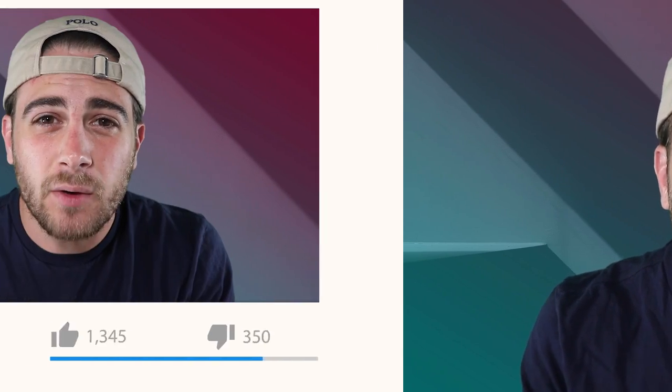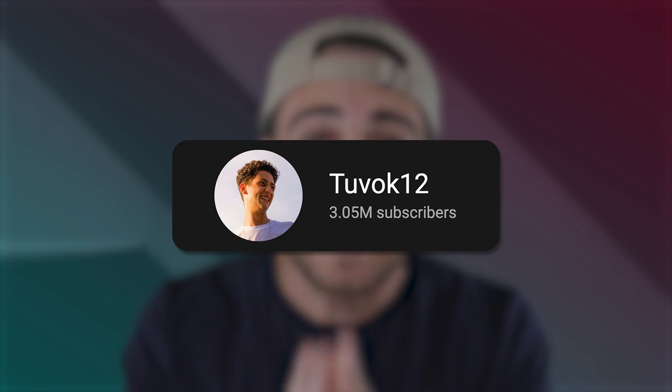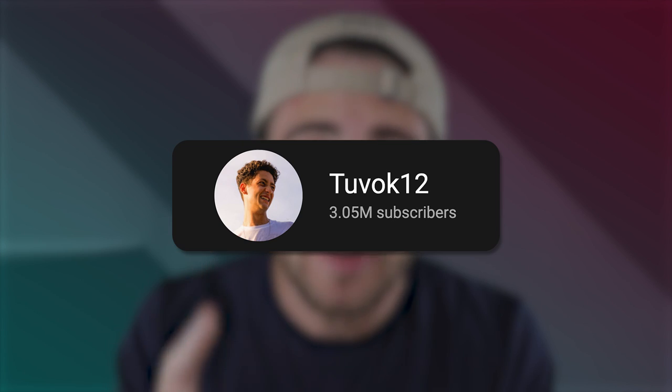By the end of this video, you're going to know exactly how to go viral on your next YouTube Short because you're going to have the four principles. Every time I mention one of these principles, one is going to be unlocked. These four principles are going to allow you to go viral on YouTube Shorts. One creator got over a million views using them, another over 5 million views, and one creator got over 200 million views on a single video and gained over 1 million subscribers in just 24 hours.